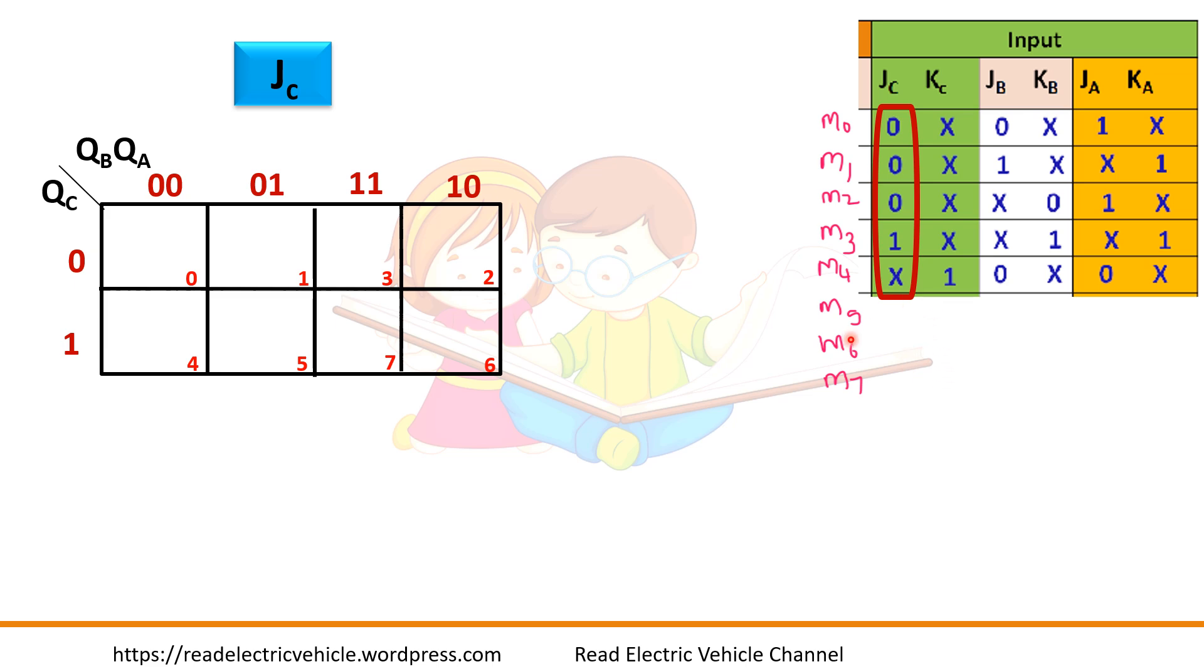Or some people will take the next state for this as 0, 0. Instead of don't care they will take it as 0, 0, because if the counter by any chance, by some disturbance, enters into any of the unused states. What are the unused states in this counter? 5, 6, and 7 are unused states. By chance if it enters into any of the unused states it gets stuck up. It doesn't know where to go, what should be the next state. So in such cases, what they will do? They will give the next state for 5 next state will be 0, 0, so that the flip-flop, the counter, gets reset or it will come to the original position. For that they will give 0, 0. But I have taken it as don't care itself.